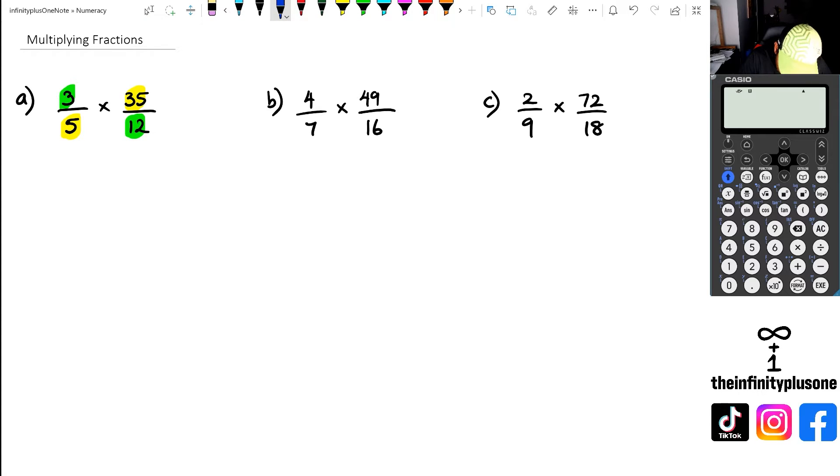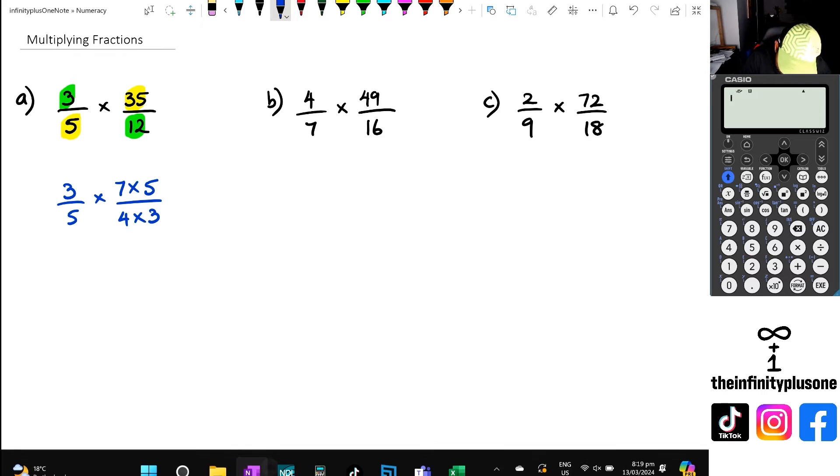So what I'm going to do is I'm going to write down 3 over 5 multiplied by 35, which happens to be 7 times 5, divided by 12, which happens to be 4 times 3. And when I do this, and I think this is the beauty of fractions, because what you do is when you do fraction times another fraction, you can actually rewrite it like this.